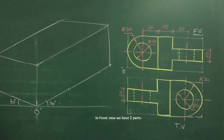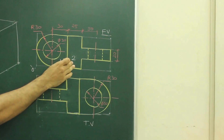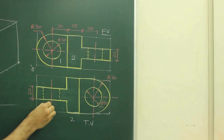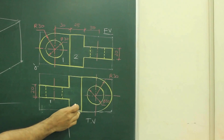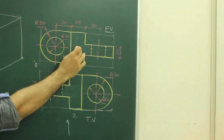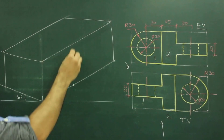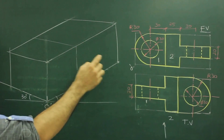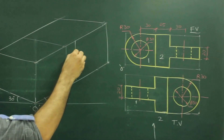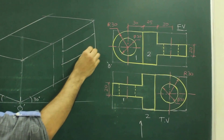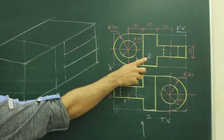Now after this, when you see the front view, there are two parts — part 1 and part 2. In the top view, part 2 is here and part 1 is here. So we will start with part 2, because that is nearer to the observer. First we will draw this T-shape. You have to leave 60 from here, then we have 25, then leave 20.